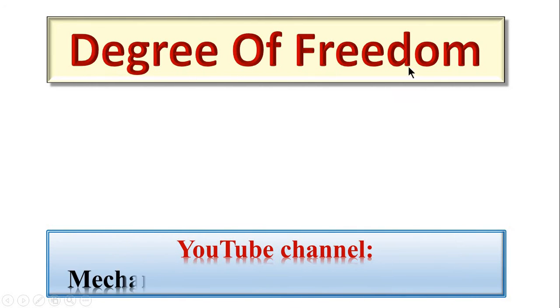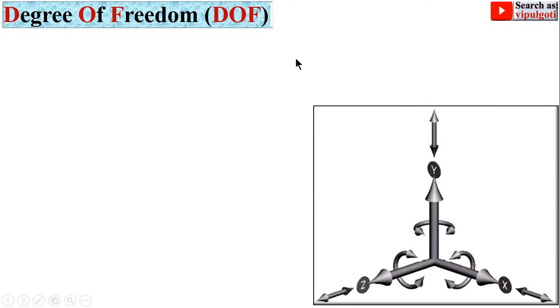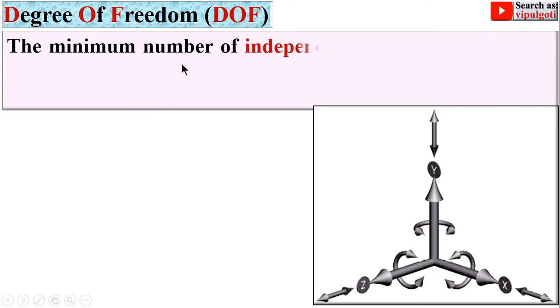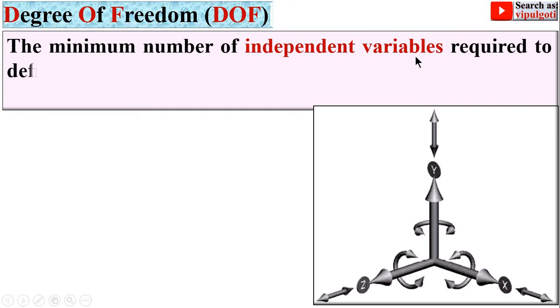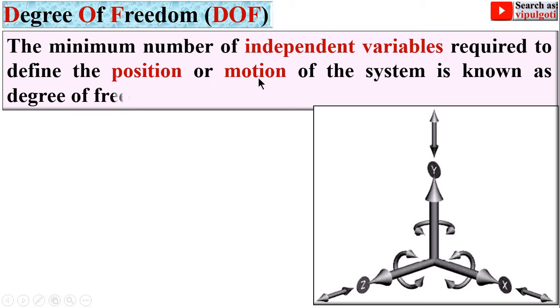Today I am going to teach you degree of freedom. Welcome to my YouTube channel Mechanical Engineering Management. The short form of degree of freedom is DOF. The minimum number of independent variables required to define the position or motion of the system is known as degree of freedom. This is the definition of degree of freedom.